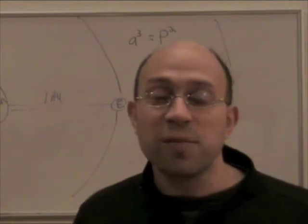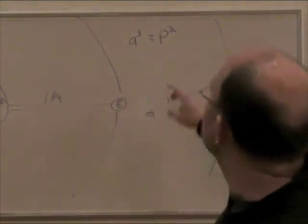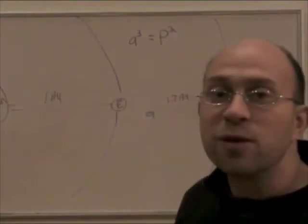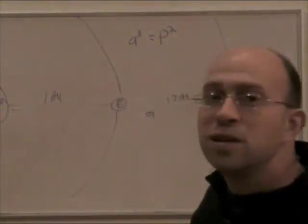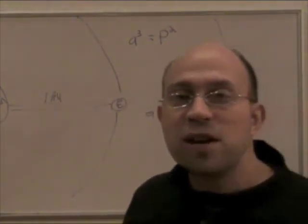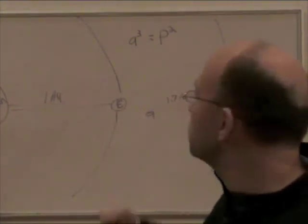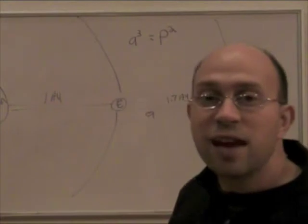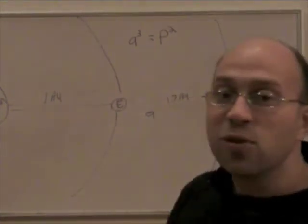So, for Jupiter, for example, we know it takes 12 years to go around, roughly. And so, if you take 12 squared, we get 144. And so, we need some number, which, when it's cubed, equals 144. And that turns out to be roughly 5. So, what we've done is we've taken something easy to observe, a period, and Kepler's third law tells us how to translate that into something that's really hard to observe, which is the size of the orbit.